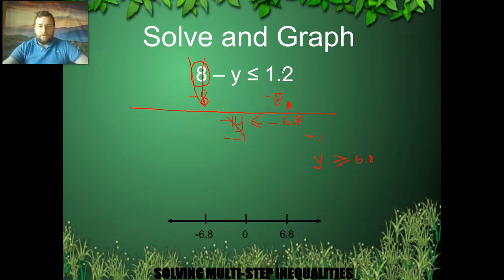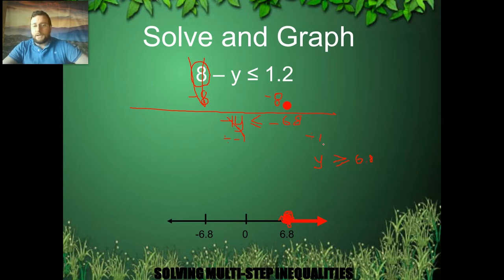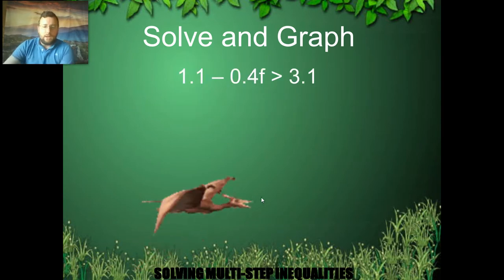Looking for numbers bigger than 6.8 — I include and shade the 6.8 because it's bigger than or equal to, then go to the right. That's the graphical representation for it.